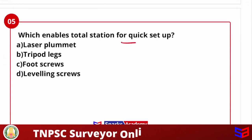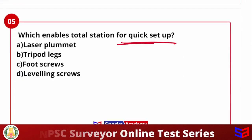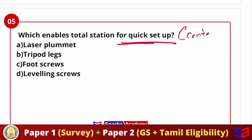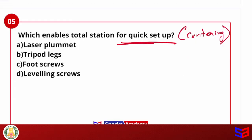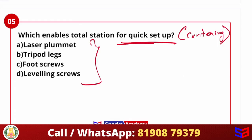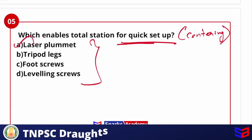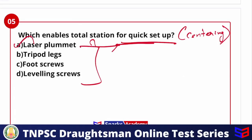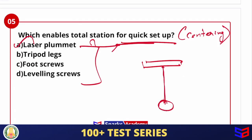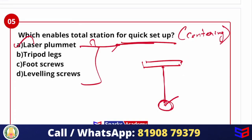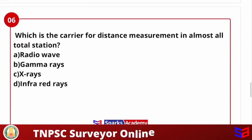Which enables a total station for quick setup? For centering, the instrument used for a quick setup is the laser plummet. Using a laser plummet saves time when setting up the total station, as the laser ray directly helps in centering the instrument quickly.